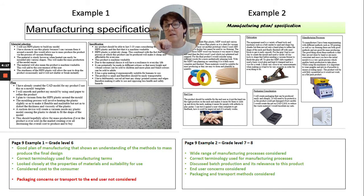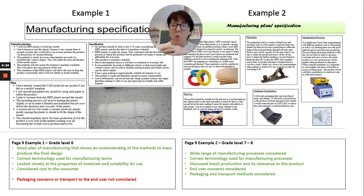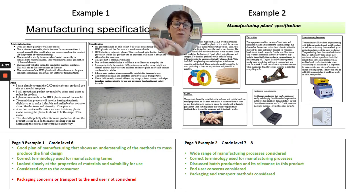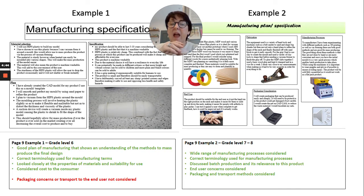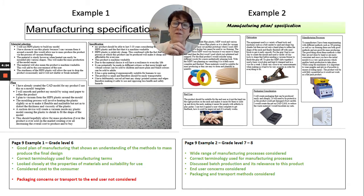The example on the right-hand side gives more indication of a much higher level. Here we've got wide manufacturing processes discussed, fabrication, and how it's going to be assembled. They've looked very carefully at batch production and how that is relevant for their particular product. They've also thought carefully about the end user and talked in some detail about why this product is specific to their needs, and of course they've considered packaging and how they're going to transport it. This example goes in much more depth into those specifics to do with manufacturing, which is why it is a higher level.